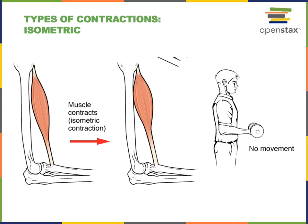Another example is pushing against a wall. As you increase muscle tension pushing against the wall, you are never able to produce enough force to move it. Pushing against a solid brick wall, you can produce an increase in muscle tension without producing any movement. This is an isometric contraction.